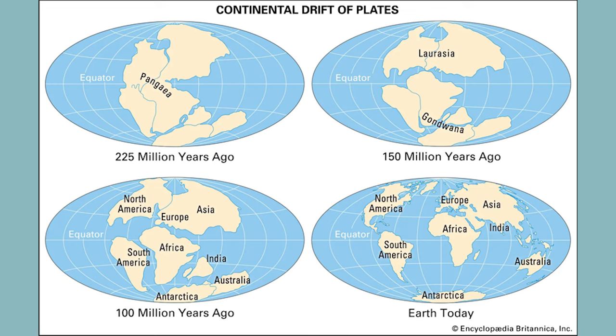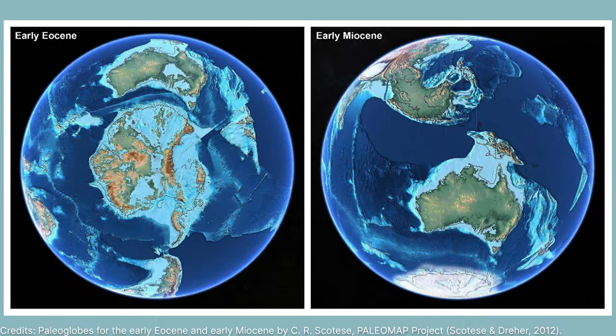We're talking about around about the Eocene, 40 million years ago, when Australia began to separate from the Antarctic flora and the Antarctic landmass, which of course was still connected to South America. And basically as Australia drifted north, it took some of that original Gondwanan rainforest with it.